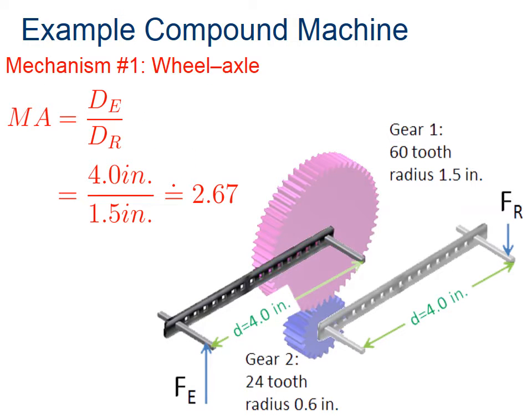So how do we calculate these things? First, let's take a look at the wheel and axle. It's important to note here that it's pretty obvious that our effort distance is 4 inches. What we want to do to calculate our resistance distance is actually just the radius of that gear, because that's where we're going to get our resistance at 1.5 inches. So when we do that math, we come up with a mechanical advantage of 2.67.